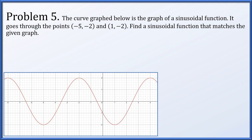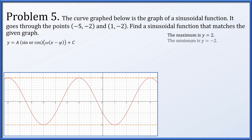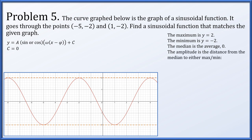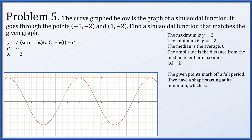Problem 5: we're given the graph of a sinusoidal function going through the points negative 5, negative 2 and 1, negative 2. We find a maximum of y equals 2 and a minimum of y equals negative 2, so the median is 0 and c equals 0. The amplitude is 2, so the absolute value of a equals 2, meaning a is plus or minus 2. The given points mark off one full period, and the shape starts at its minimum, which is a negative cosine shape. So we let a be negative 2 and use a cosine function.